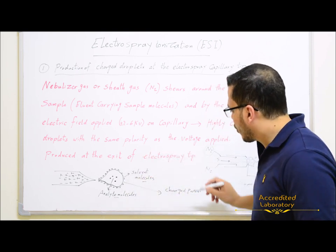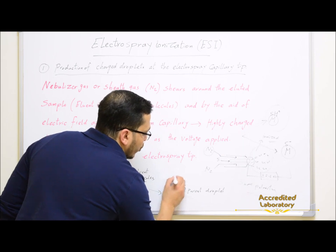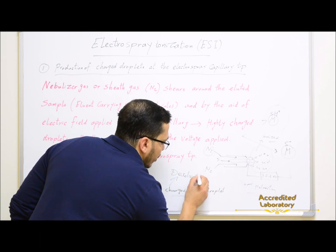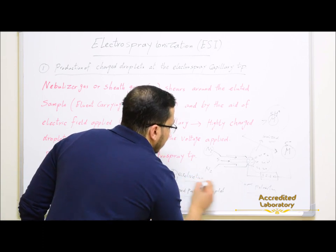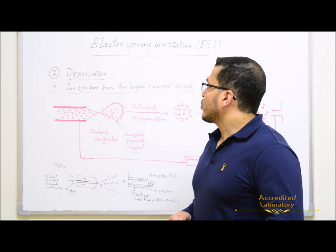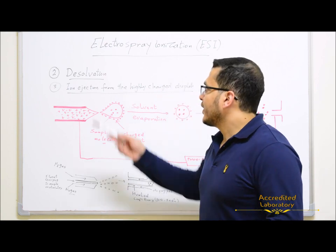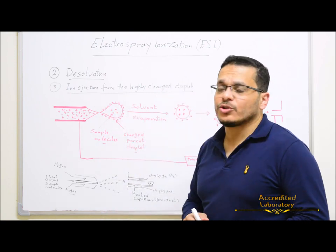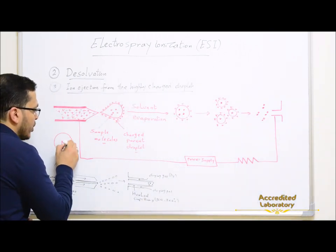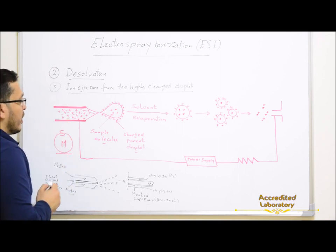After the charged parent droplet is formed, it undergoes the desolvation process, which is the second step. In the desolvation process, solvent molecules are removed, leading eventually to ion ejection from the highly charged droplets. The charged droplets consist of sample molecules surrounded by solvent molecules with the same polarity as the high voltage applied.